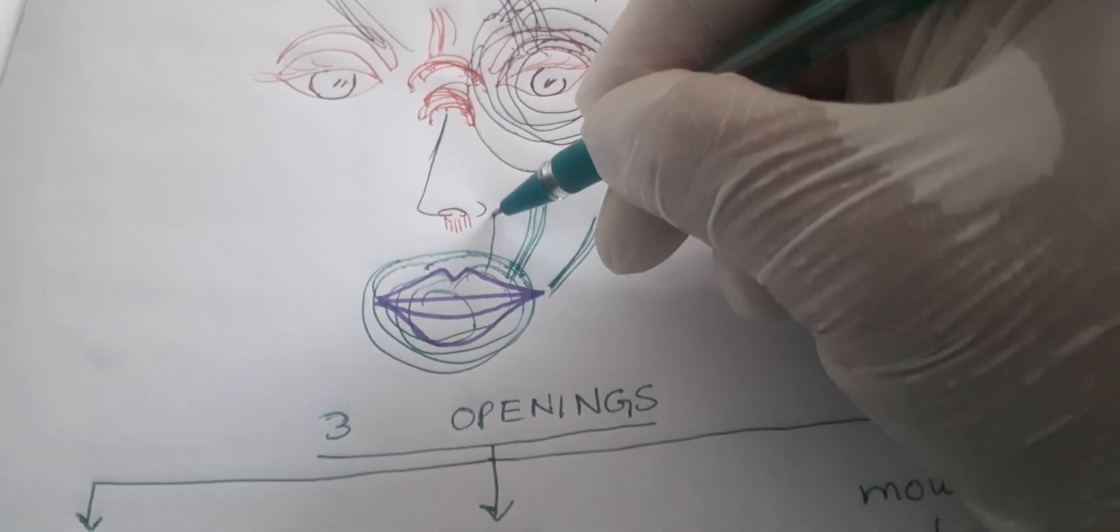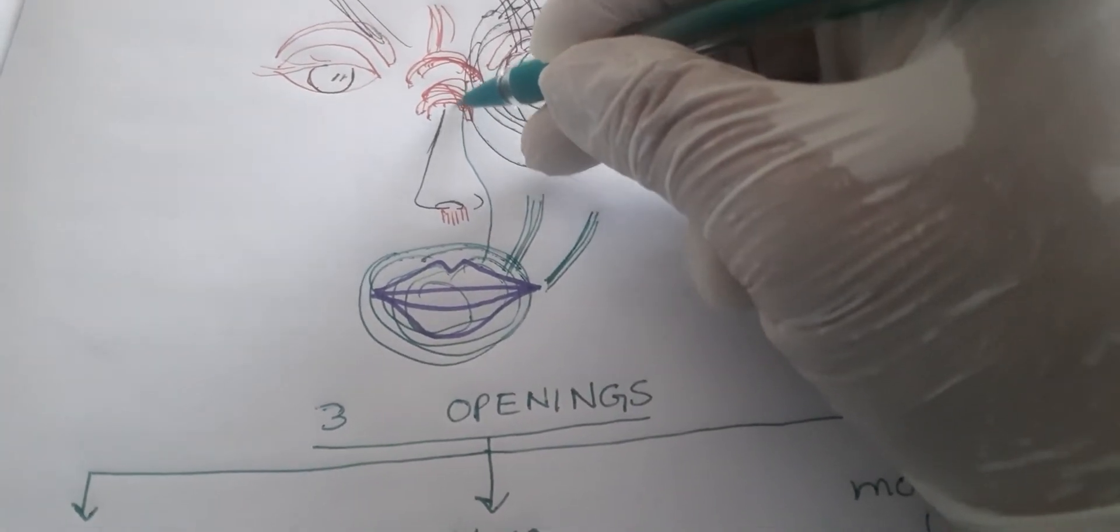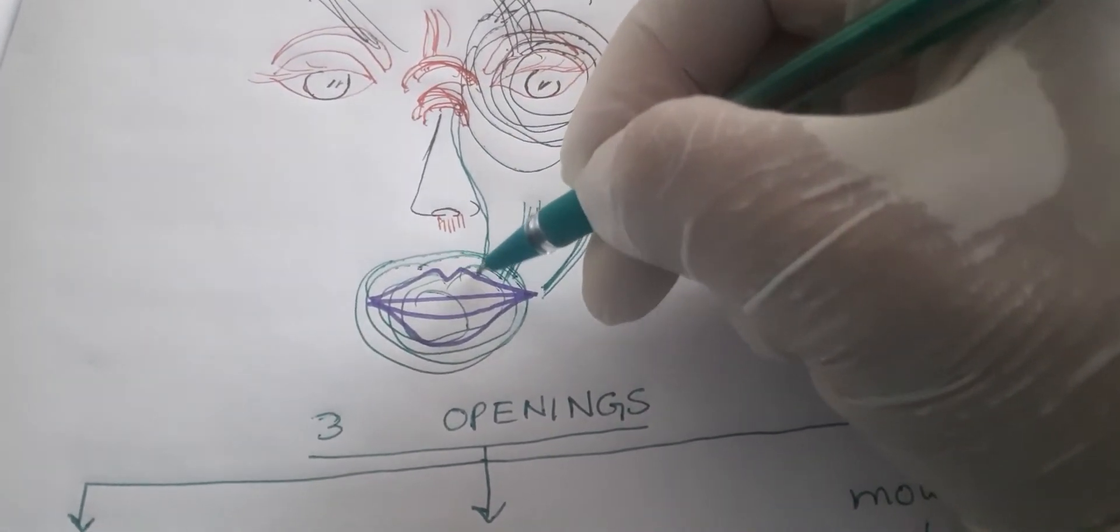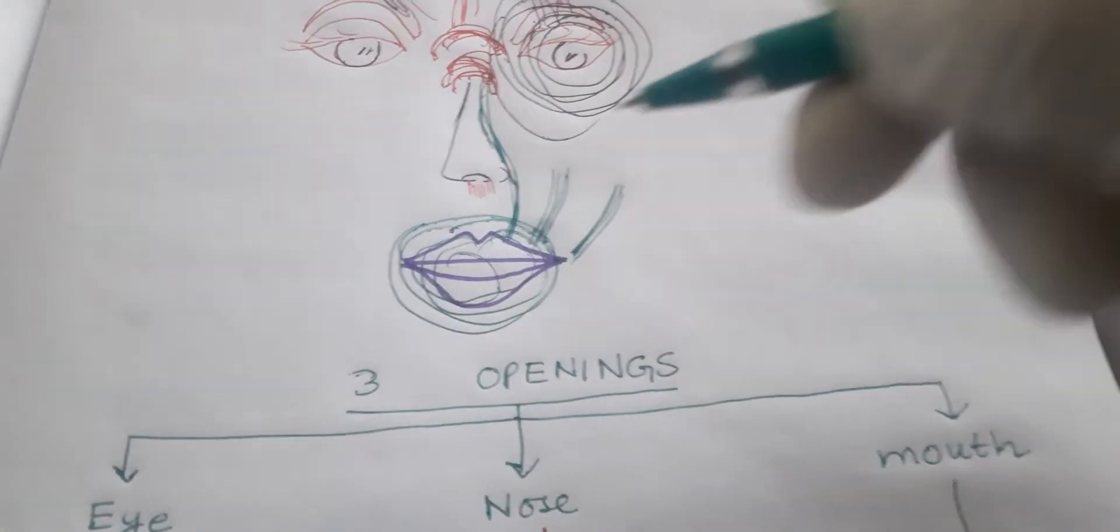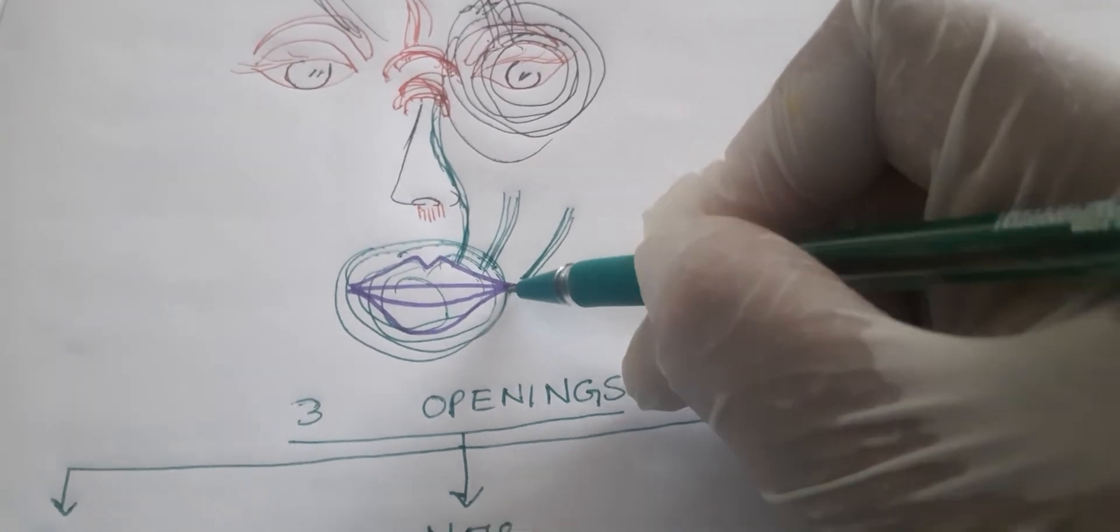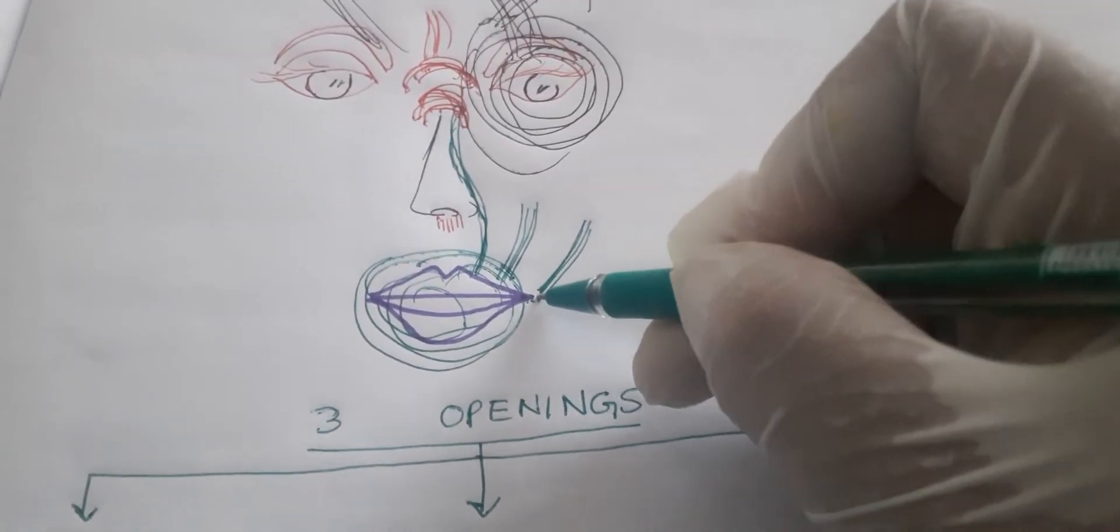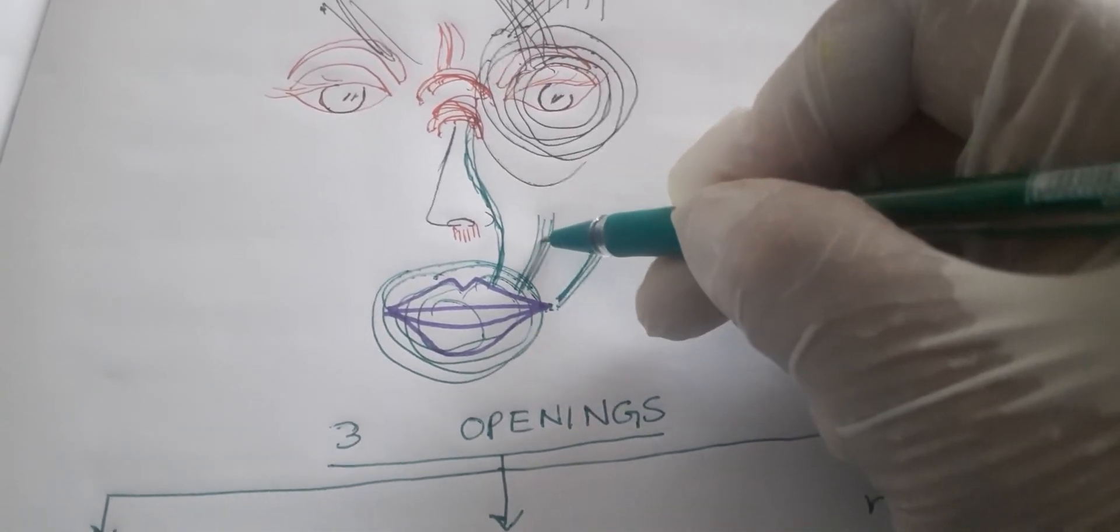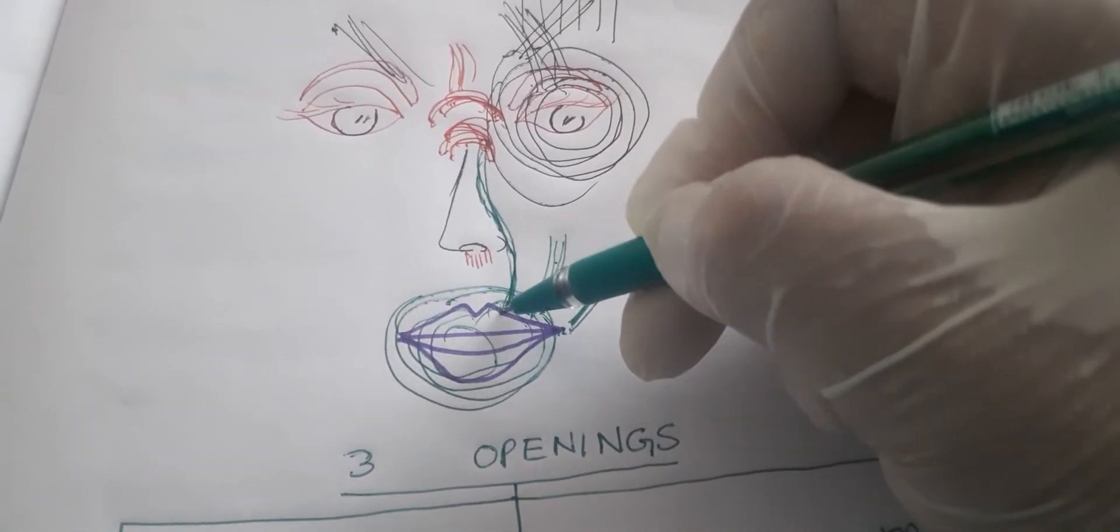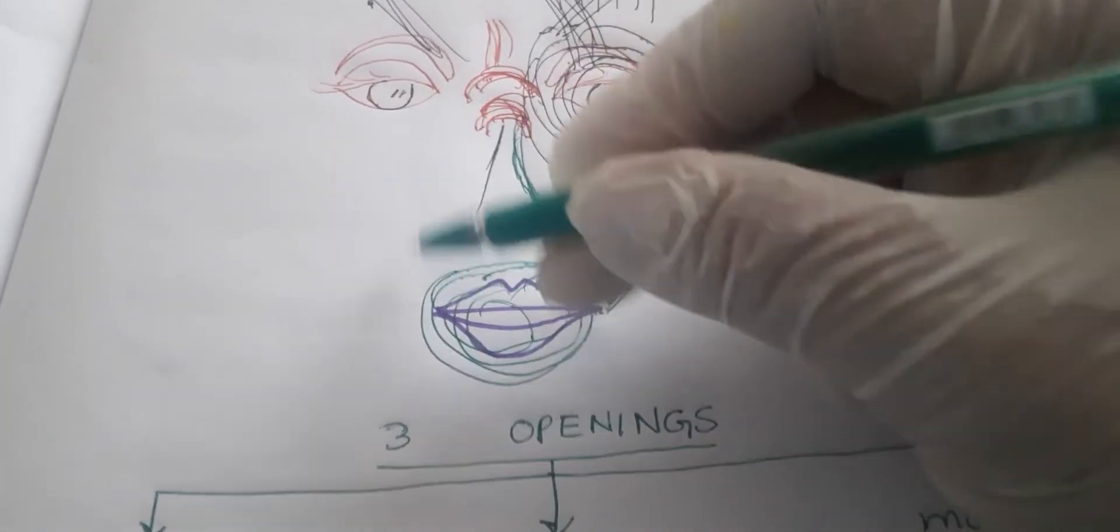And levator labii superioris alaeque nasi - going to the lateral wall of the nose, lateral aspect of the nose. Levator at the angle of mouth - levator anguli oris. In the middle, levator labii superioris and levator labii superioris alaeque nasi on both sides.